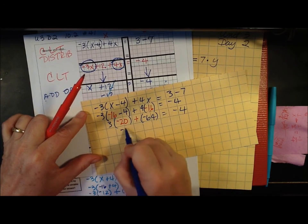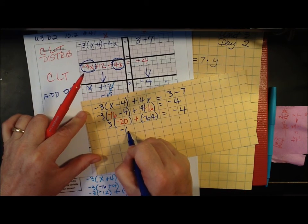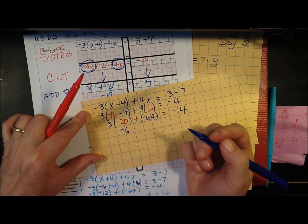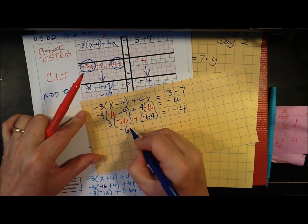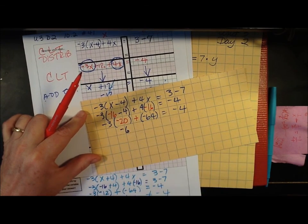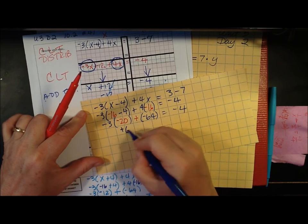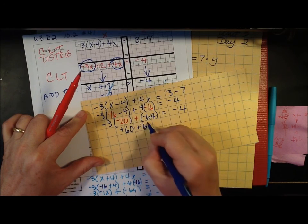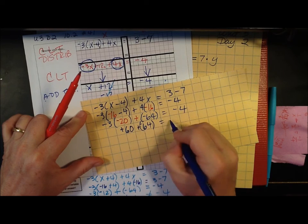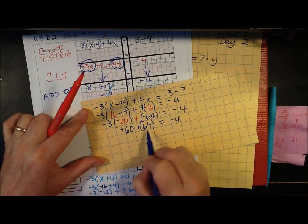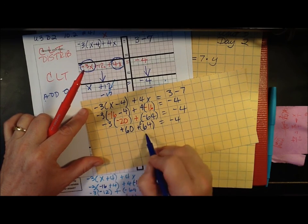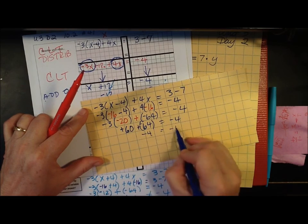So 3 times negative 20 is negative 60. Oh, negative 3. See, I'm not paying attention. That's positive 60. Plus negative 64 equals negative 4. A positive, a negative. The difference is negative 4 equals negative 4. And yes,